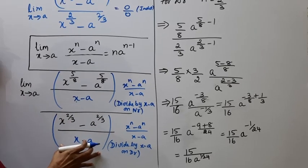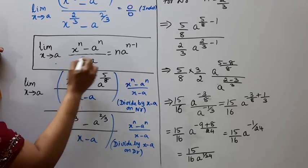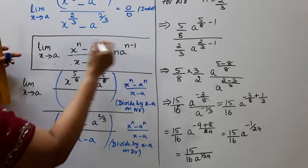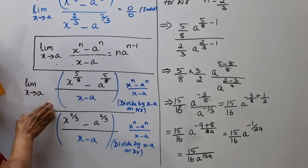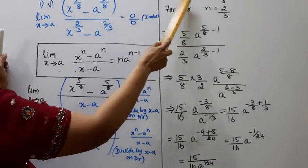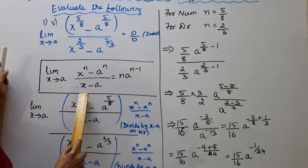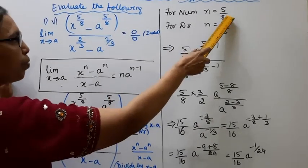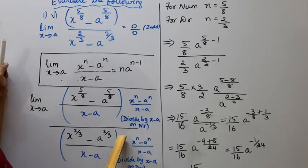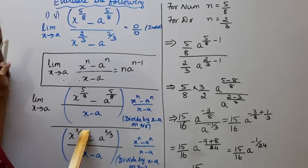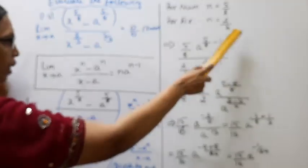X minus A on numerator, X minus A. So, this formula is n into a power n minus 1. This limit extends to a. So, for numerator, numerator is x power n, n is 5 by 8. The denominator, denominator is x power n, n is 2 by 3.